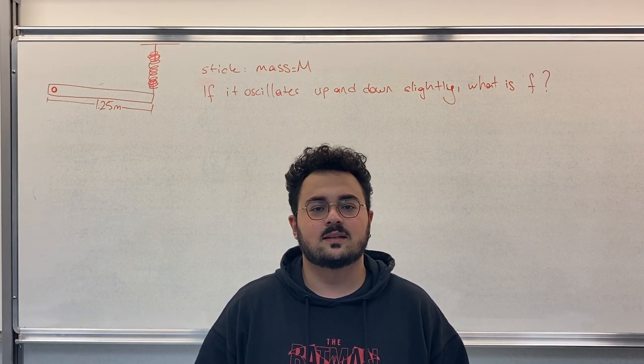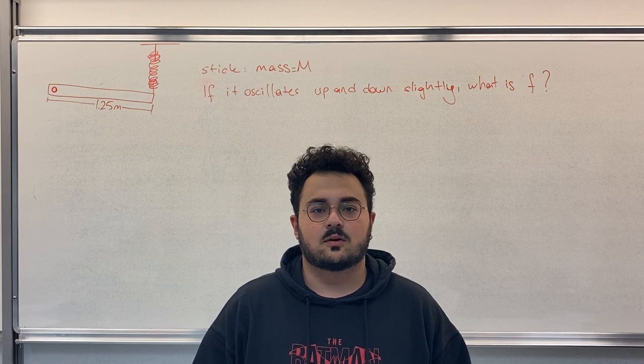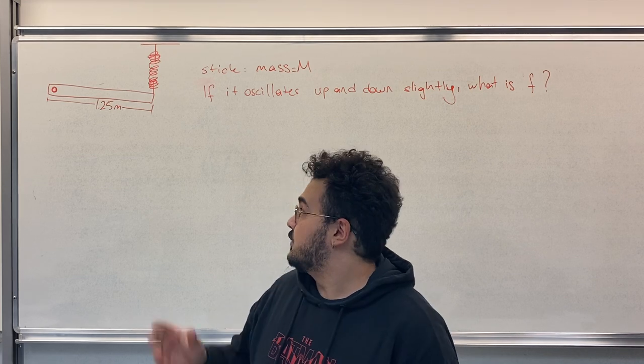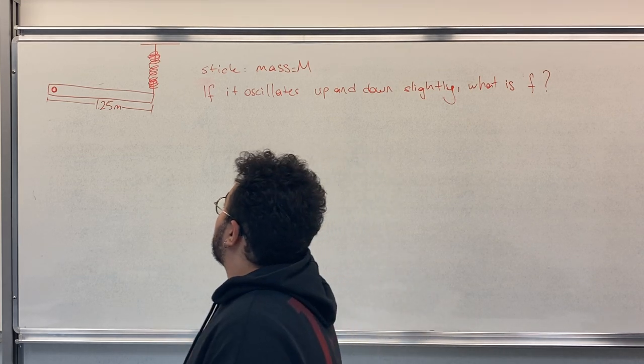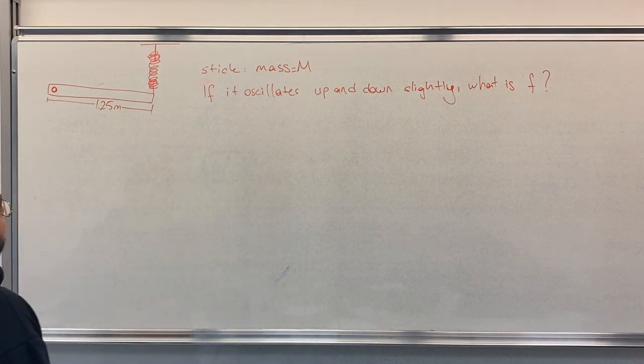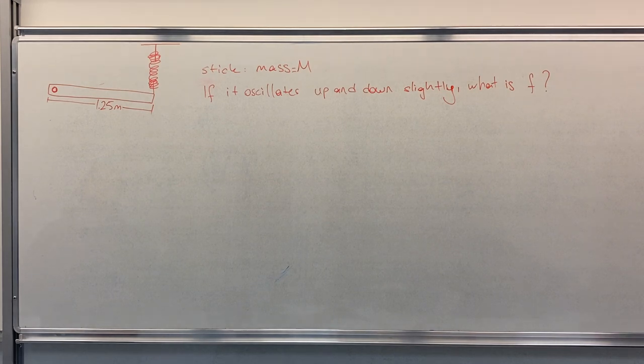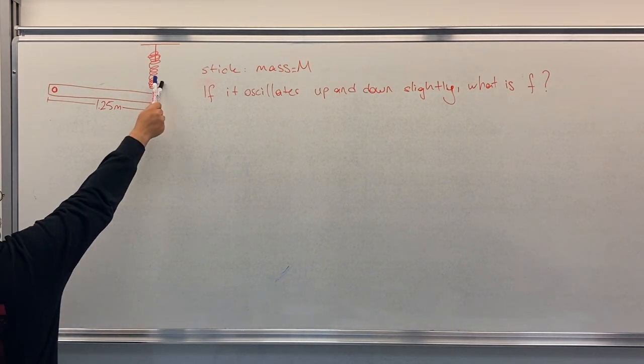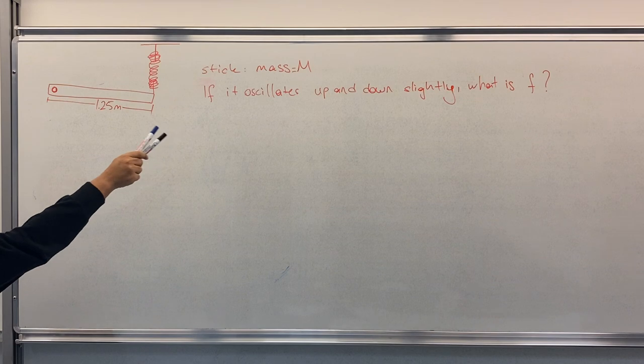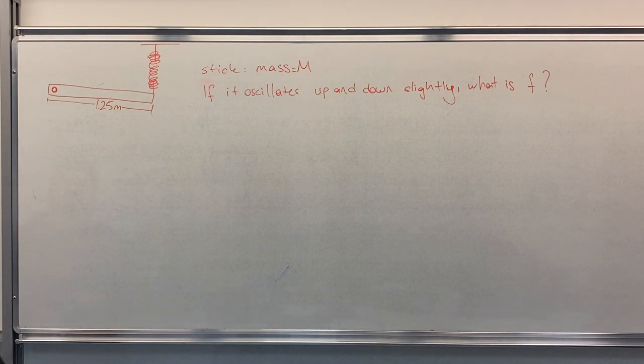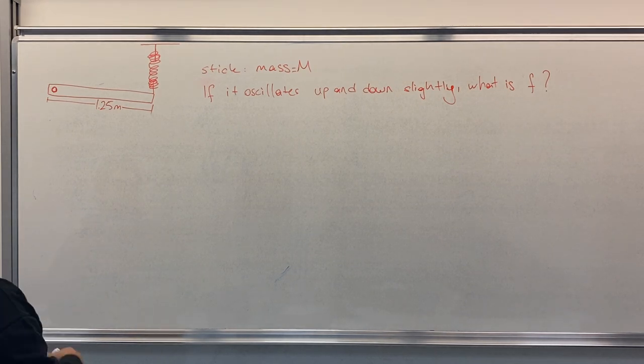Hello everyone, I am Boran. In this video, I will solve a question in Physics 101. This is a basic harmonic motion question. We have a spring here, a stick with mass M and length of 1.25 meters. The question asks: if it oscillates up and down slightly, what is the frequency of the oscillation?